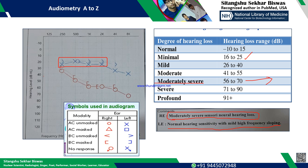Why is the right ear classified as only sensorineural? Because the air bone gap is always maintaining within 5 dB — there is no significant conduction problem. If the air conduction graph were further down with a larger gap, it would be a mixed type of hearing loss — both conduction and sensorineural. Hope the explanation is clear. I have explained how to read the audiometry. My contact details are given — you can ask me in case of any problem. Thank you so much.